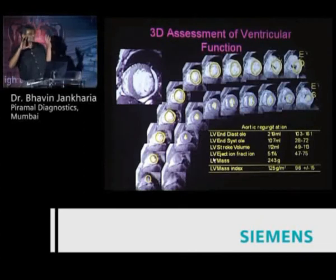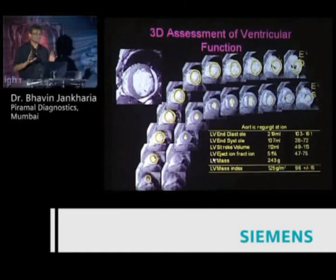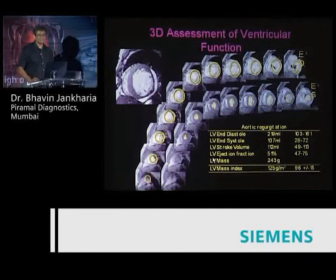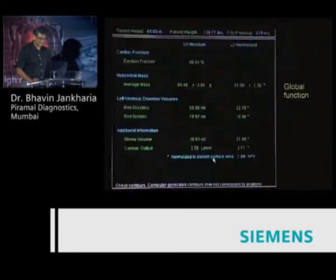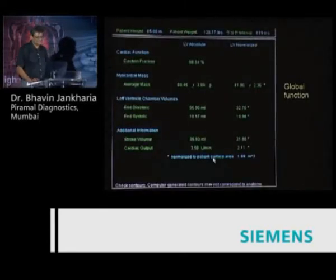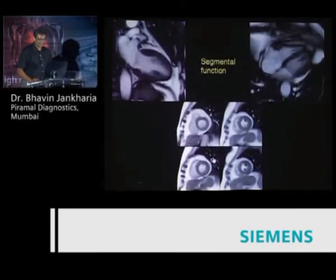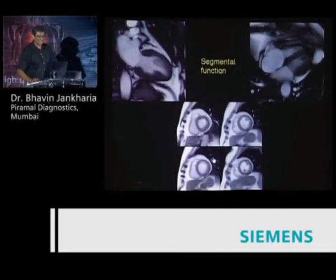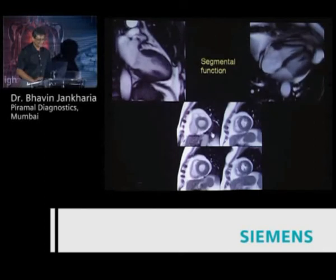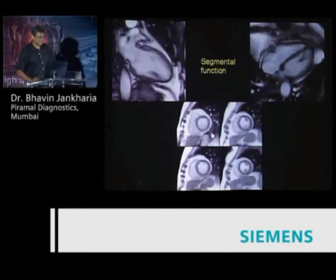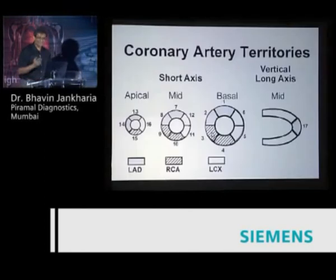Very rarely does anybody actually measure on echo — it's all eyeballing. We are much more accurate with MR, so let's stick with that. This is how we get the various values and report them. The next thing to do is segmental function, where we look at the short axis images. There is an AHA classification of 17 segments, and we should say which of these segments is contracting well and which is not.